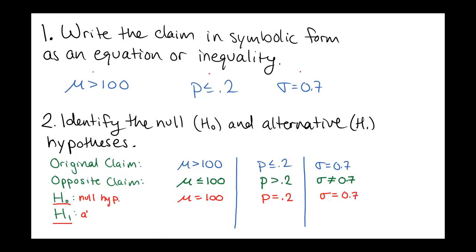The alternative hypothesis is related to our original claim but is the opposite of the null hypothesis. When we have the original claim and the opposite claim, we pick whichever one does not contain equality to be the alternative hypothesis. Here we had greater than and less than or equal to — we use the greater than because it does not contain an equal sign. The null hypothesis is always an equality; the alternative hypothesis is whichever one doesn't have an equal sign. In this case that's mu greater than 100, which matches our original claim. For the meat example, the alternative is p greater than 0.2, which was the opposite of our original claim. And for the steel wire, it's sigma not equal to 0.7.